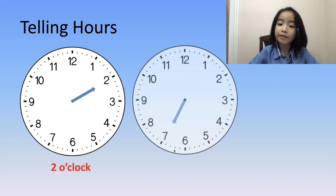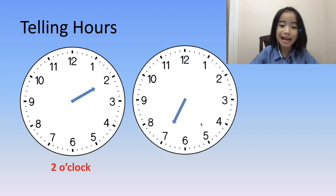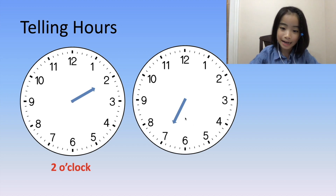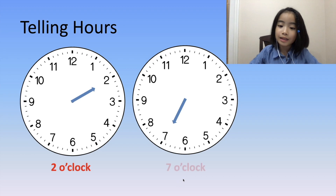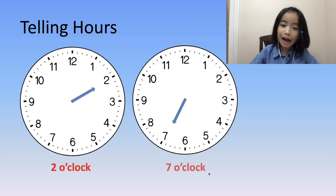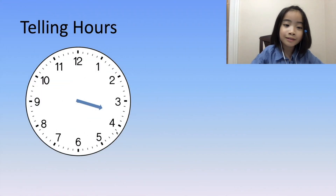Now, let's look at another example. The hour hand is pointing to 7. So it's 7 o'clock.